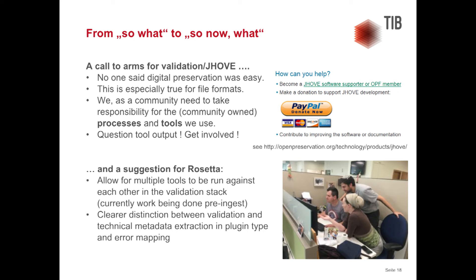This is a call to arms for validation and JOV. No one said digital preservation was easy, especially for file formats — that's not big news. But as a community we need to take responsibility for the community-owned processes and tools we use. I'd ask you all to question the tool output and get involved. Ways to get involved: JOV events such as hack days, the OPF document interest groups handling error messages for the JOV PDF module — working groups anyone can join regardless of whether they're an OPF member.